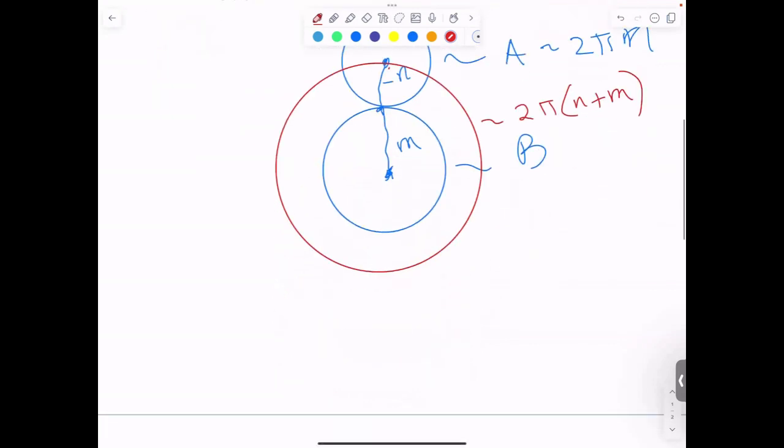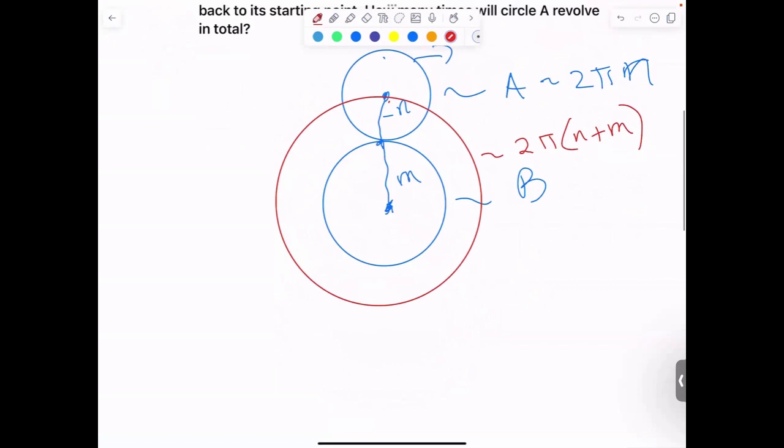Now, how many times does 2πN go into 2π(N + M)? We do the division: 2π(N + M) divided by 2πN.